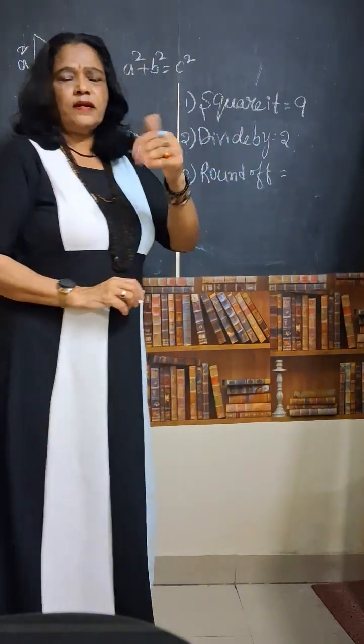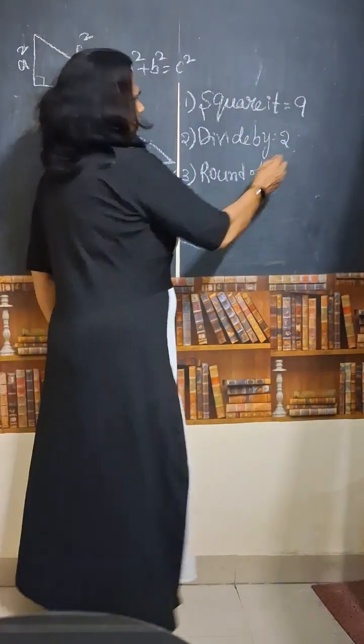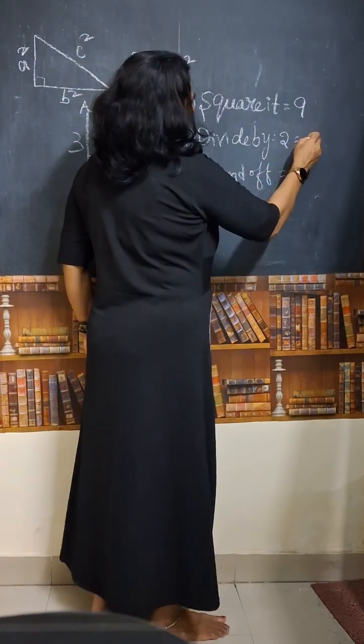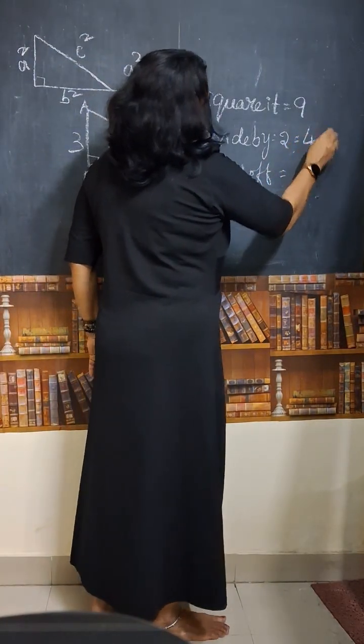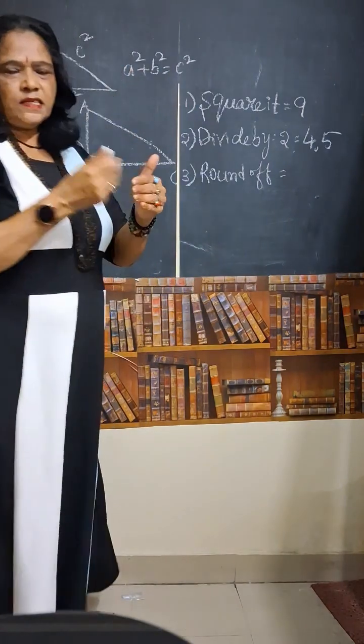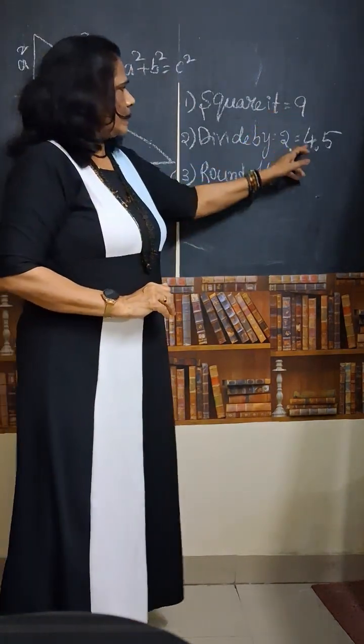Divided by two. Divide nine by two. How much it will be? Nine by two is four point five. Nine is divided by two, so that is four point five.